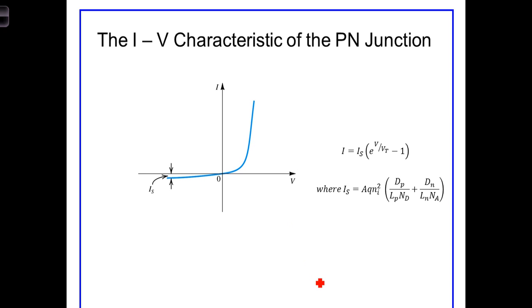This is the graph showing the current flowing through the diode as a function of the voltage across it. Notice I sub s, the very small reverse bias current that flows through the diode and is the result of a voltage driven drift current.